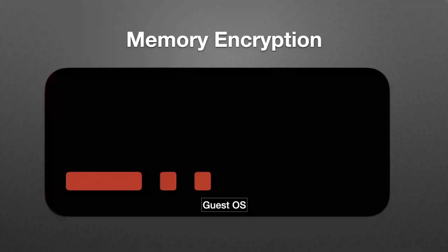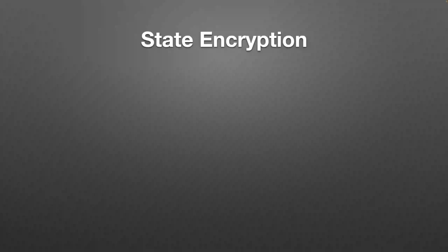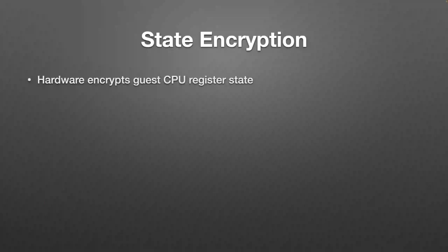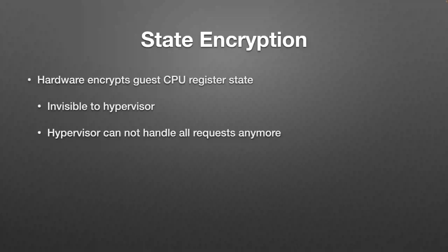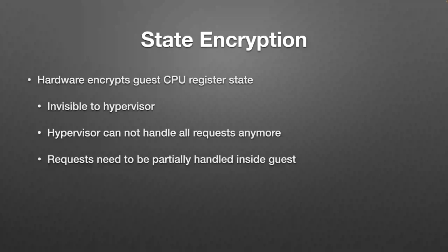Building on that is SEV-ES state encryption, which encrypts the CPU register state making it invisible to the hypervisor. The hypervisor can neither read nor modify guest register state, which is problematic because without this access the hypervisor cannot handle certain intercepts. For instruction intercepts like RDMSR or CPUID, the hypervisor needs to access guest register state to get instruction parameters and write back emulation results. When CPU state is encrypted, these requests must be partially handled inside the guest.